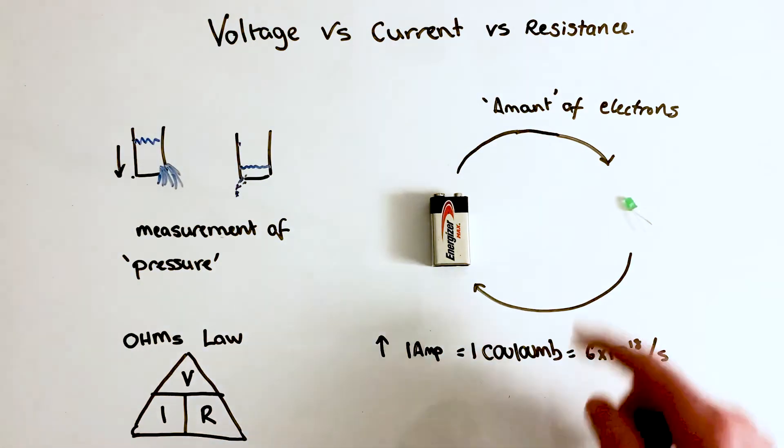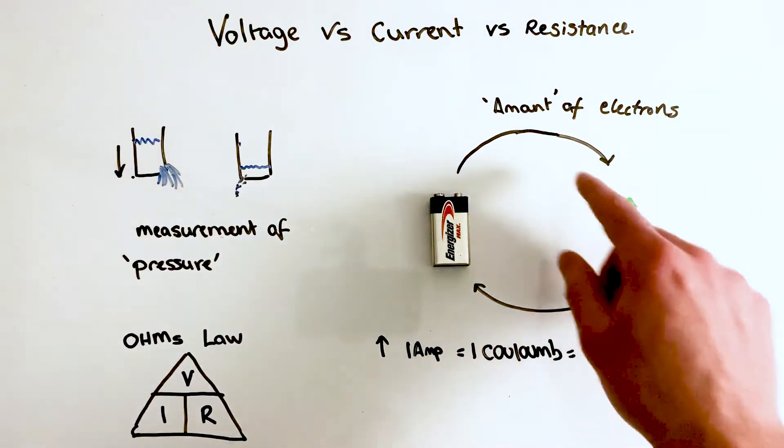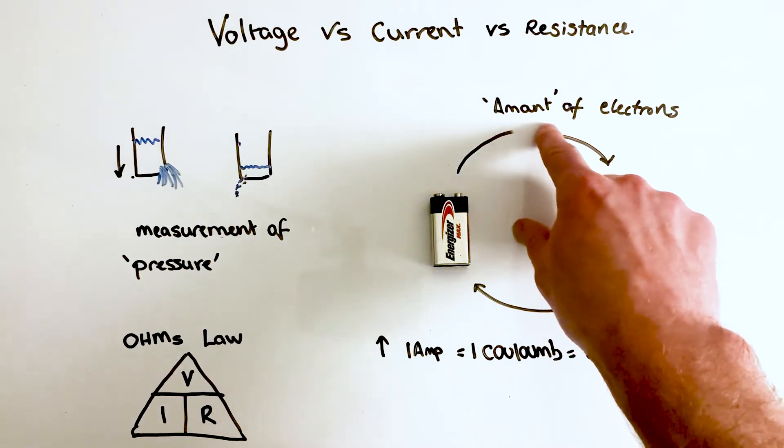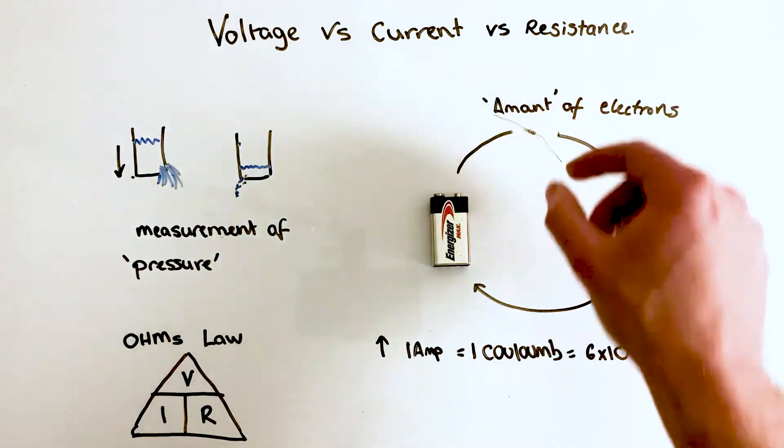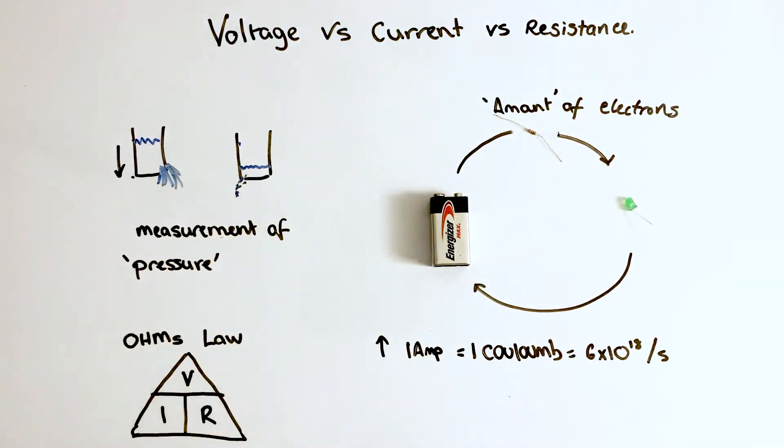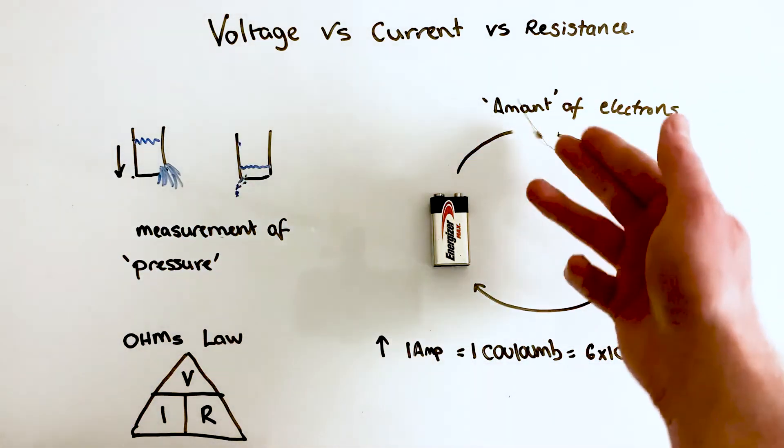So it's easier to talk about resistance once we've already talked about current. If I was to take my circuit here and put like a little divider in here, put something that's a little bit challenging for those electrons to pass through, that's what we really call resistance, or this is what's actually called a resistor.